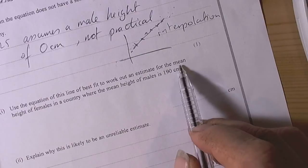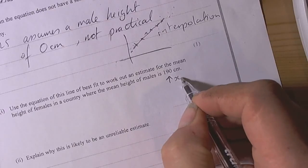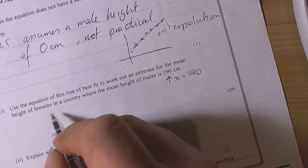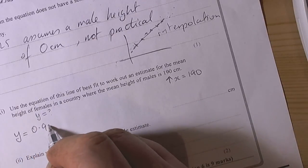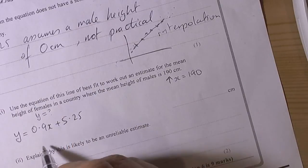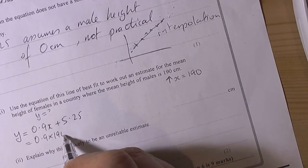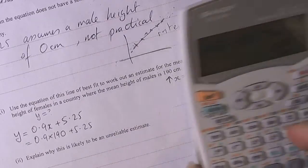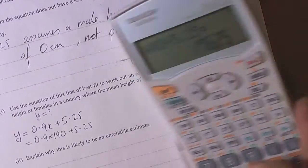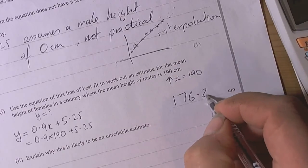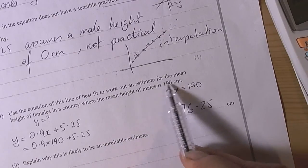Use the equation of the line of best fit to work out the estimate for the mean height of the females in a country where the mean height of the males is 190. Basically they're saying our x value is going to be 190 and they're asking us what our y value is. We take the equation they gave us, y equals 0.9x plus 5.25, and replace the x with 190. Put that into our calculator - 0.9 times 190 plus 5.25 equals 176.25. That's our estimate for the mean height of the females in a country where the males is 190.